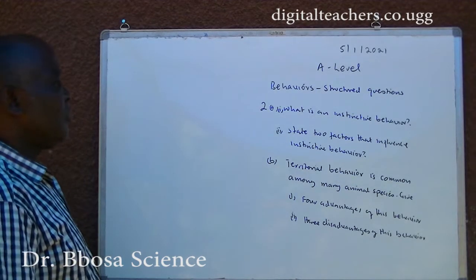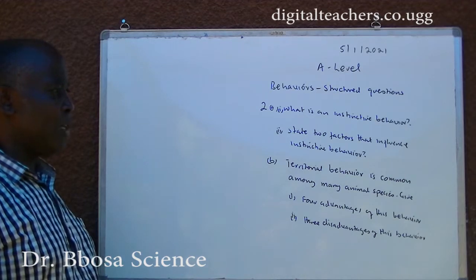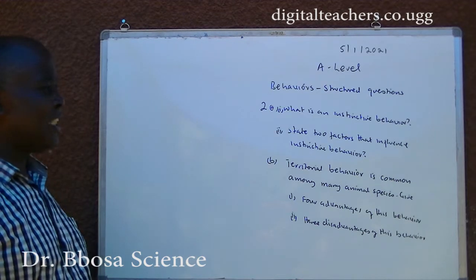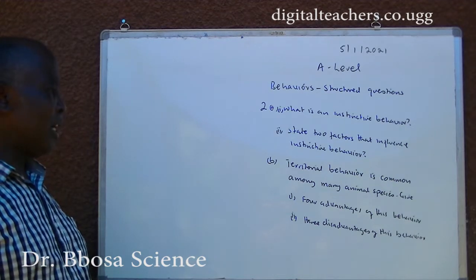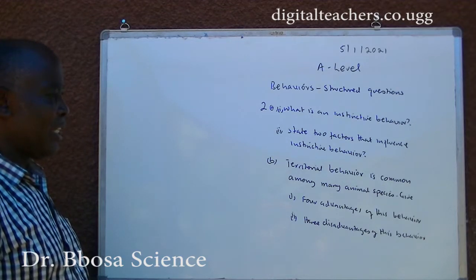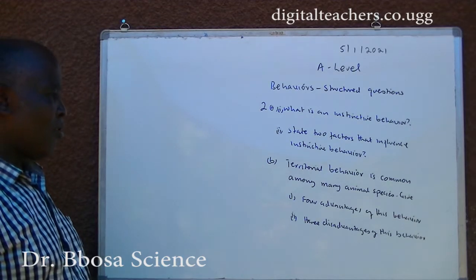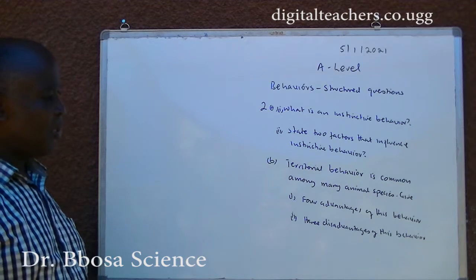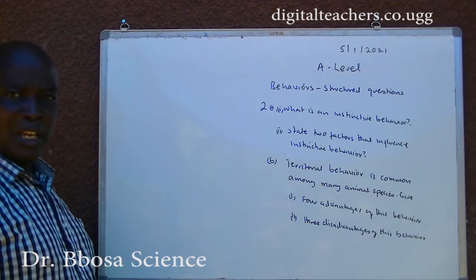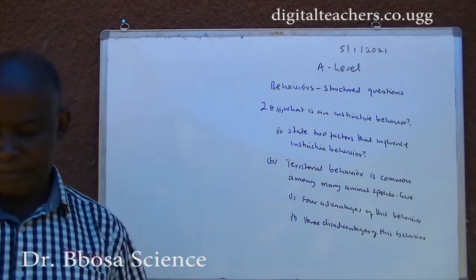Number 2 A. Number 1: What is an instinctive behavior? Number 2: State two factors that influence instinctive behavior. B. Territory behavior is common among many animal species. Give: 1. Four advantages of this behavior. 2. Three disadvantages of this behavior. You can pause and answer.